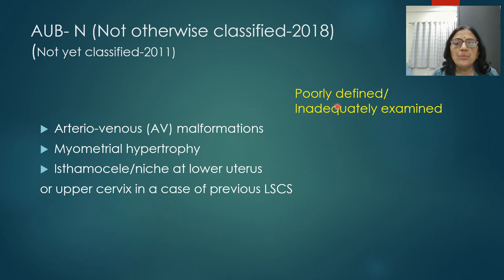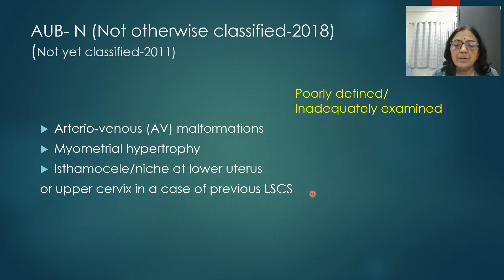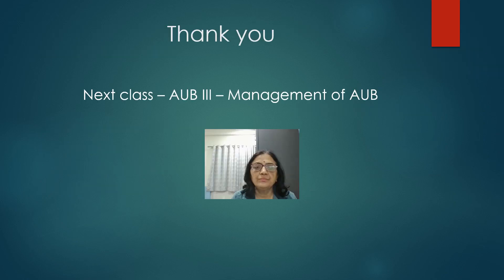AUB-N is now called 'not otherwise classified' in 2018, previously 'not yet classified.' These conditions are either poorly defined or inadequately examined. Examples include arteriovenous malformations, myometrial hypertrophy, and isthmocele or niche at the lower uterine or upper cervical part — a newly recognized entity in cases of previous caesarean section that may contribute to abnormal uterine bleeding. The next class will cover AUB part 3, which is the management of AUB.